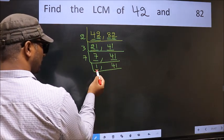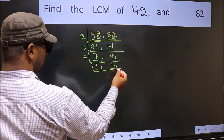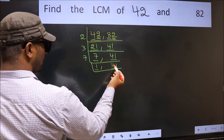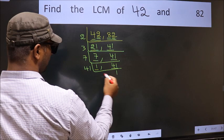Now we got 1 here. So focus on the next number 41. 41 is a prime number, so 41 times 1 is 41.